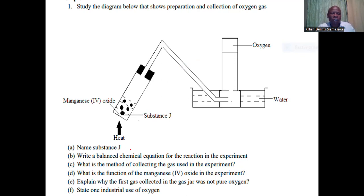The first question is: name substance J. The substance J is potassium chlorate.